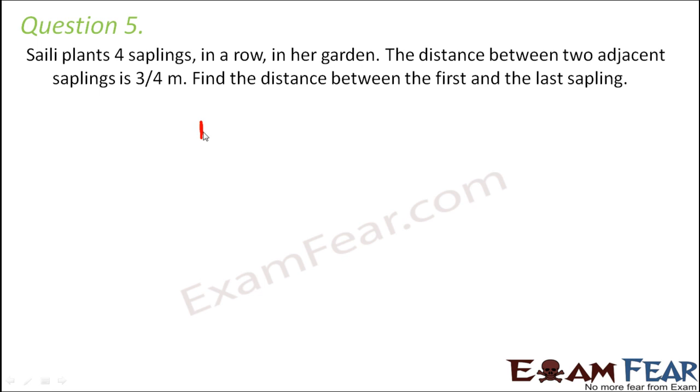So the question tries to say something like this. Let's say this is one sapling, this is another sapling, this is yet another sapling and this is the fourth sapling. So Sally has planted these four saplings in one row, one after another such that the distance between two adjacent saplings is 3 by 4. The distance between first and second is 3 by 4, second and third is 3 by 4, third and fourth is 3 by 4.